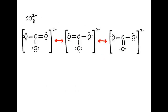Let's look at CO₃²⁻, or carbonate. We have three different structures that could contribute to its resonance form, and to decide if one is going to be more prominent than the others, we're going to calculate the formal charge on each atom in each structure. Let's look at the first structure and look at carbon.